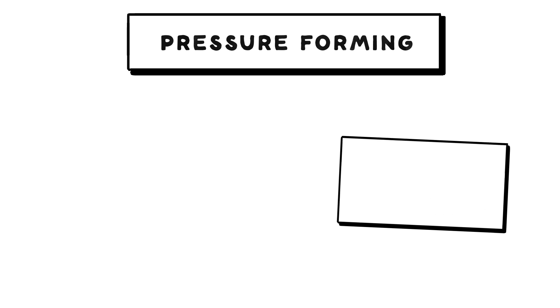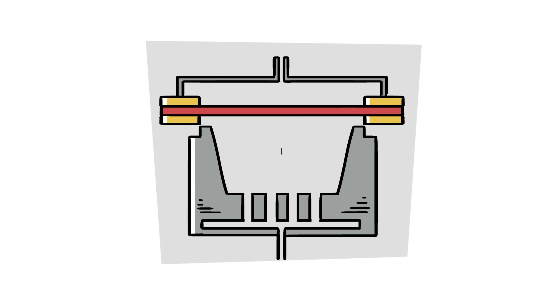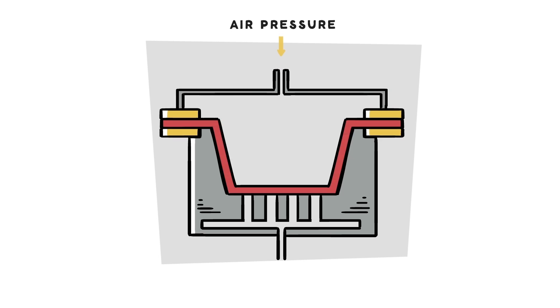The pressure forming process works best for creating pieces with sharp details, shapes, or patterns. The sheet is heated and pressed against the inside of a negative mold, while air pressure from above the sheet and a vacuum below the sheet creates the shape.